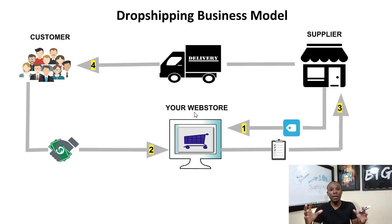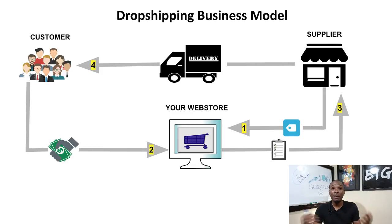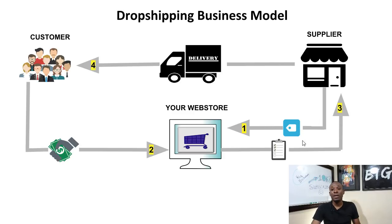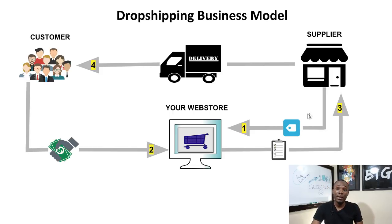Once you have your Shopify store set up, which is very easy to create, you will need to find a supplier because you need products to list in your virtual store. You don't need any inventory — you just need to have a supplier. In most cases, people who dropship on Shopify use AliExpress. You can use an app called Oberlo — it's a Chrome extension. Once you install it, you can go to AliExpress and import products to your dropshipping store for free.